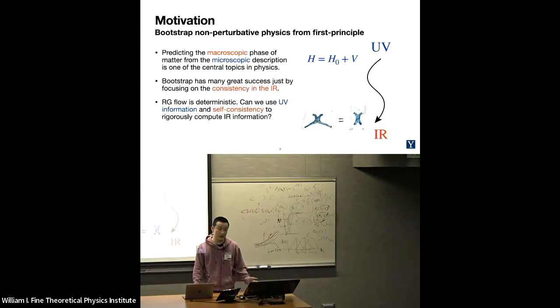For our purpose in the confinement collaboration, we want to start with some theory with some UV description and we would like to see what does the RG flow lead to, whether the theory is gapped or is it a CFT or is it something else. We look for a method that can systematically use the UV information and also use the self consistency and hopefully we can rigorously extract some information about the IR of the theory.